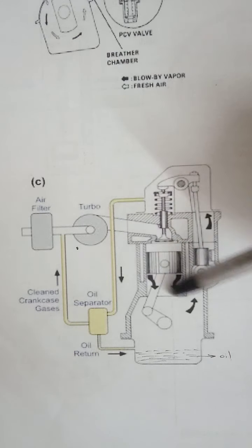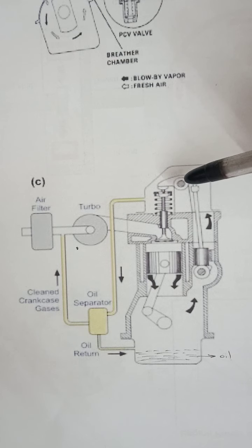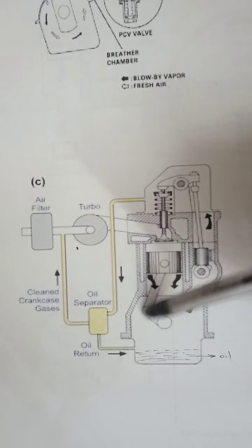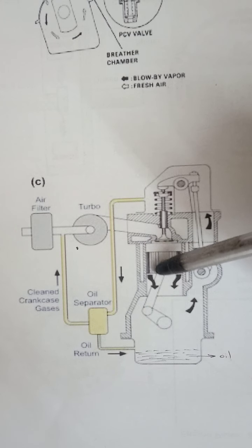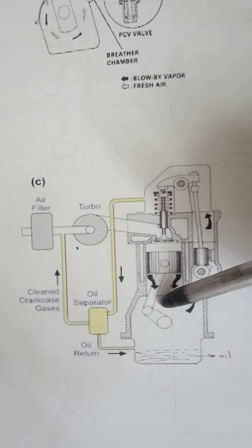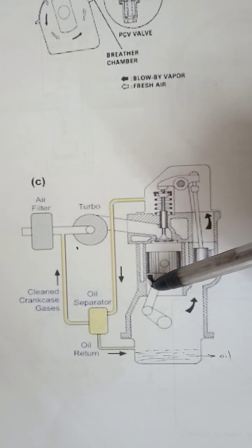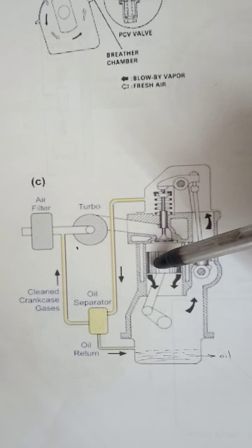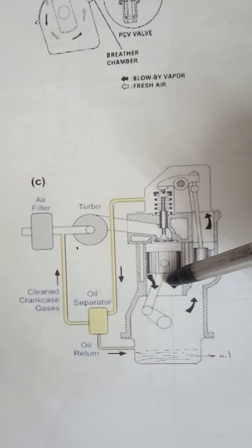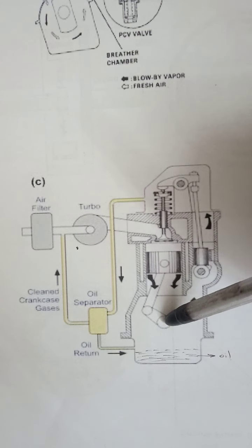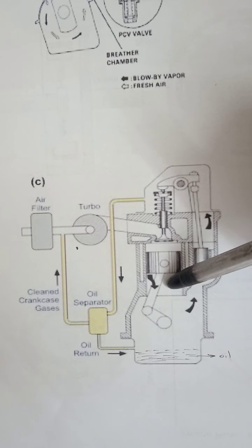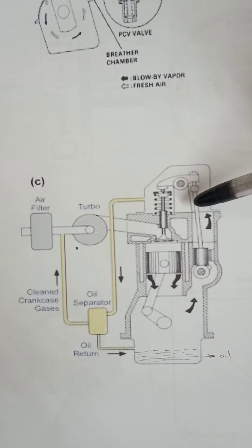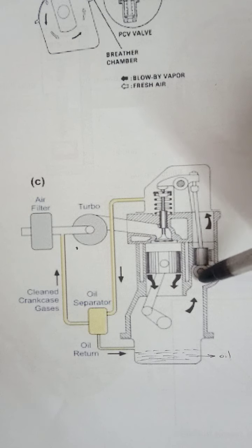The name 'positive crankcase ventilation' implies that the air inside the crankcase is in a compressed form. In the crankcase of an engine, as the piston reciprocates in the cylinder, there is compressed air below the piston. When the piston moves from top dead center to bottom dead center, the air present inside the crankcase will be in a compressed state — that is why it is called positive crankcase ventilation.